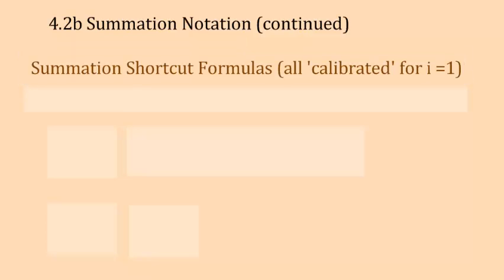So these are going to be summation shortcut formulas. Keep in mind these are all geared for the lower limit to be one. The expectation here is that the first number you're going to plug in is one. If you get a problem where that is not the case, if your lower limit is two or negative five, there are ways around that, and we'll talk about those in a couple examples later on.